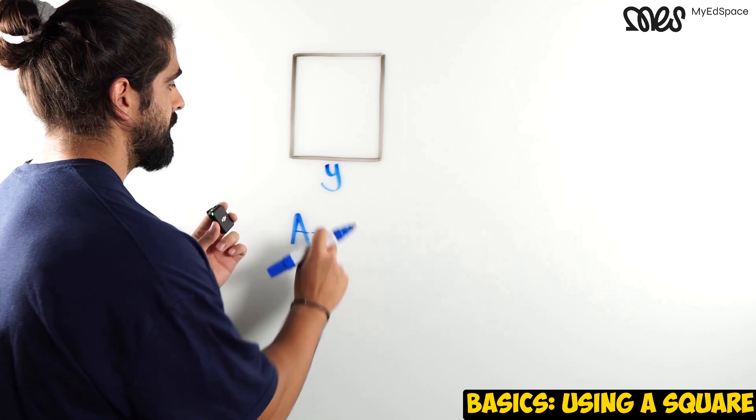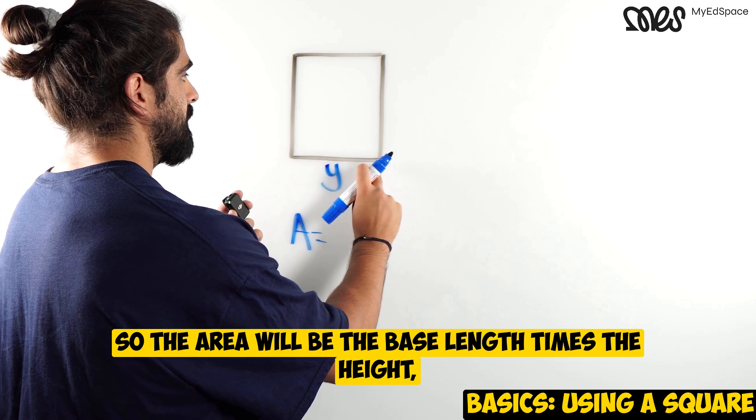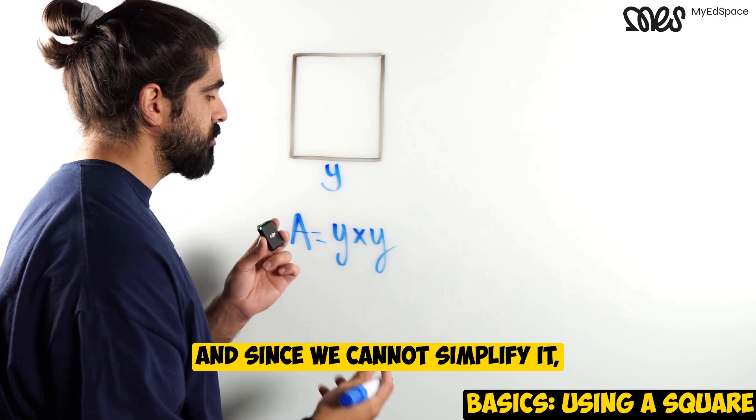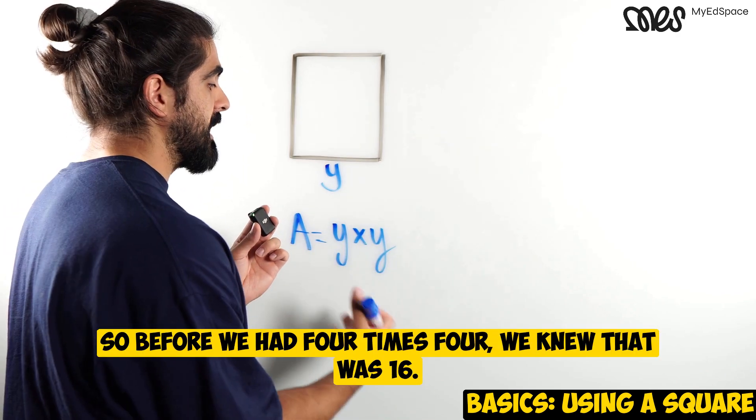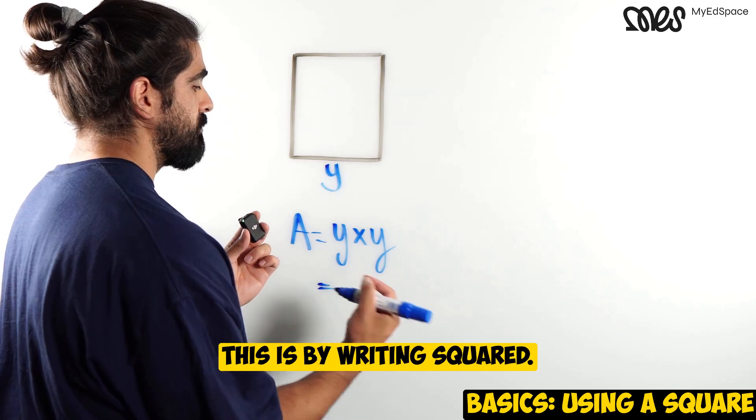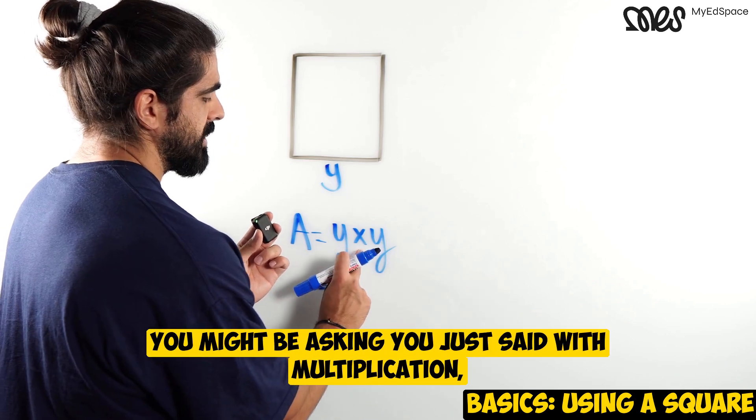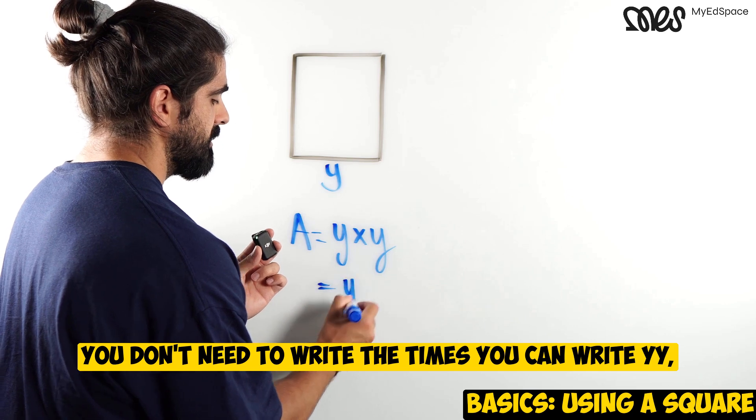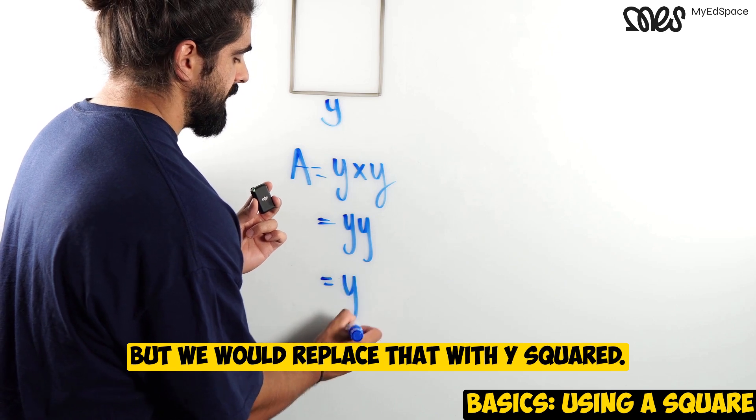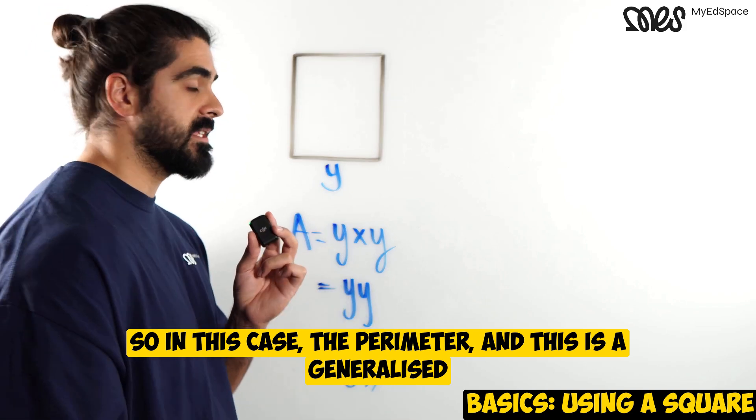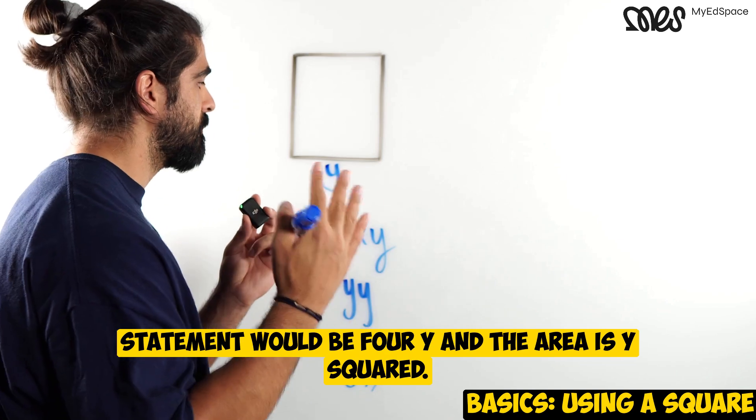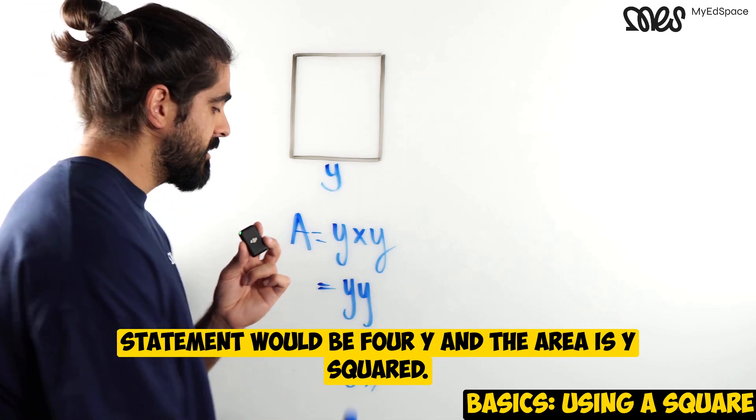So what happens when we deal with unknowns this time? Let's go back to y. So the area will be the base length times the height, so it'll be y times y. And since we cannot simplify it - before we had 4 times 4, we knew that was 16 - the only way we can simplify this is by writing y squared. You might be asking, you just said with multiplication you don't need to write the times. You can write yy, but we would replace that with y squared.